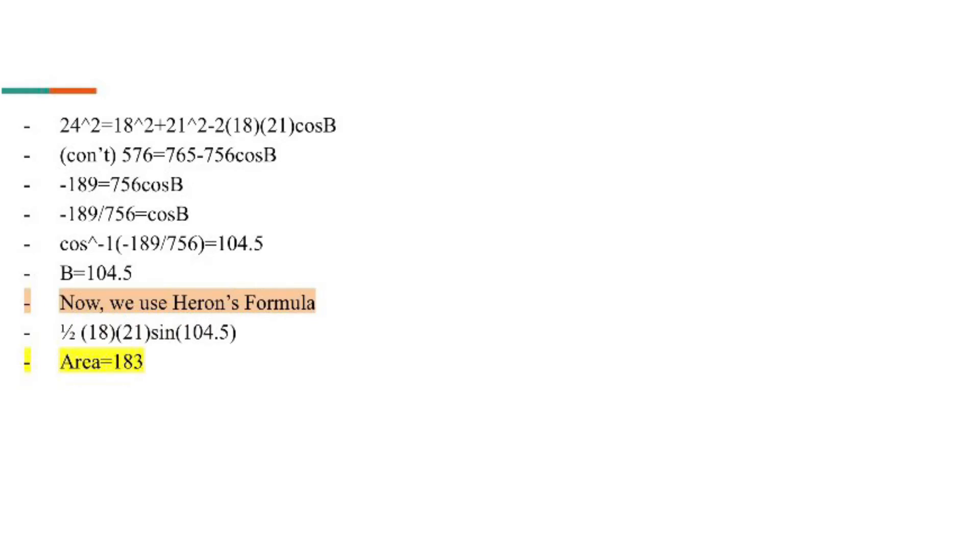Using law of cosines: 24 squared equals 18 squared plus 21 squared minus 2 times 18 times 21 cos b. When you work it out through the calculator, I got that b equals 104.5 degrees. Now that we have side b, we can plug it into Heron's formula to get an area of 183.